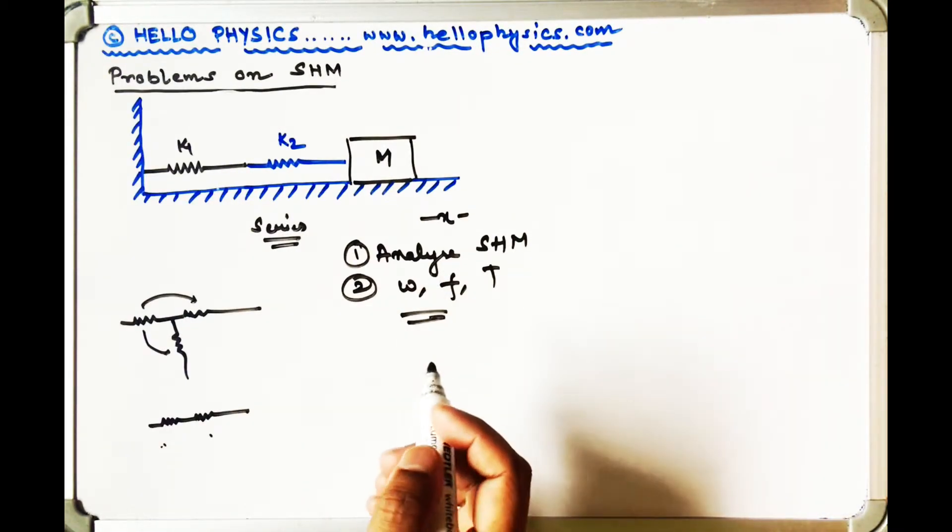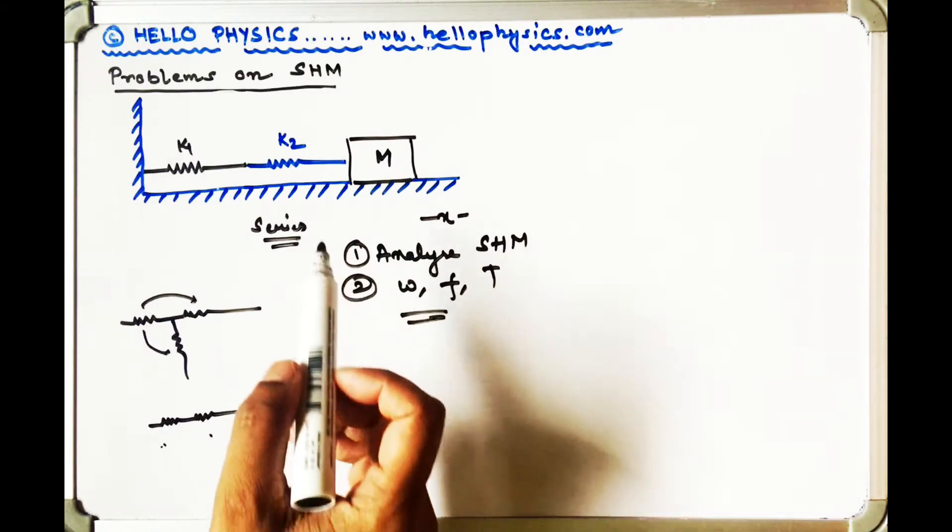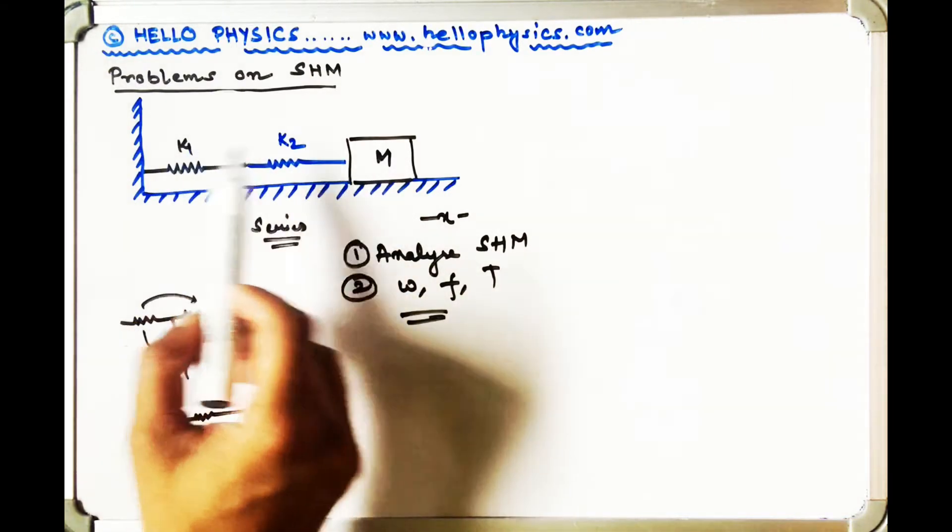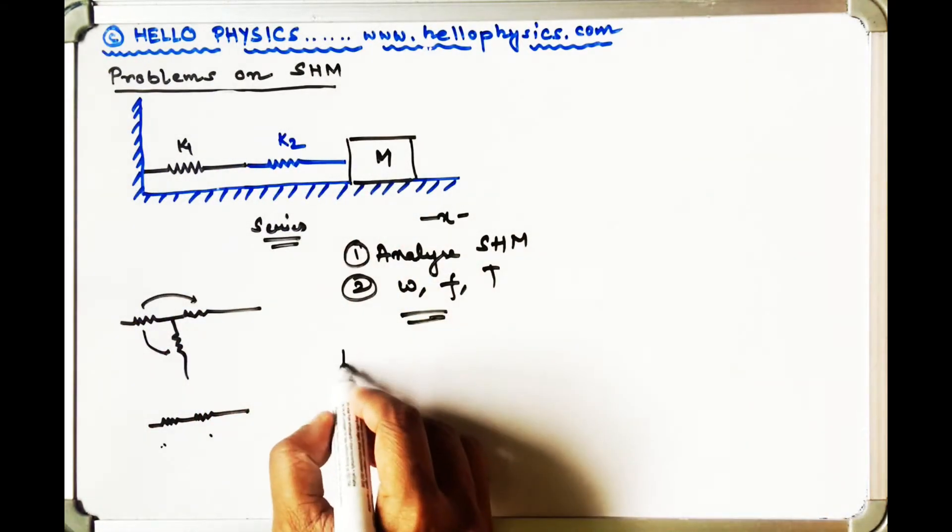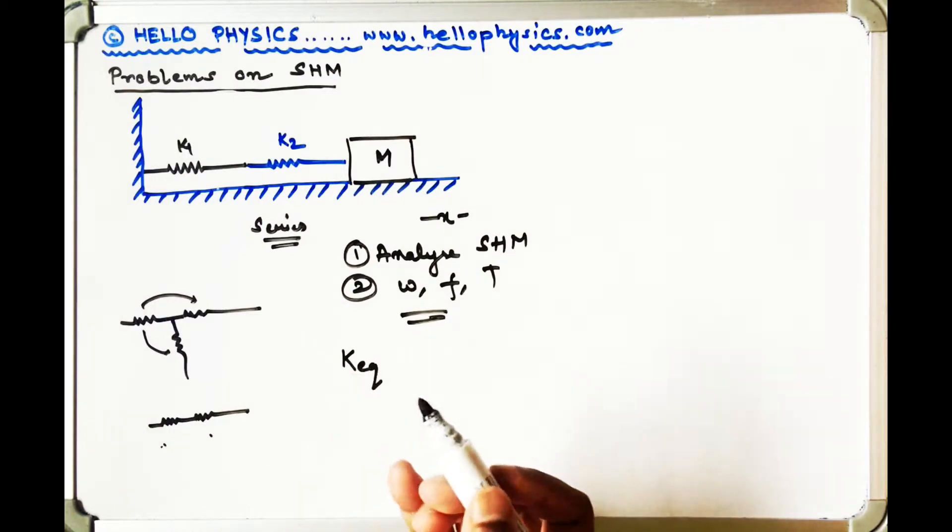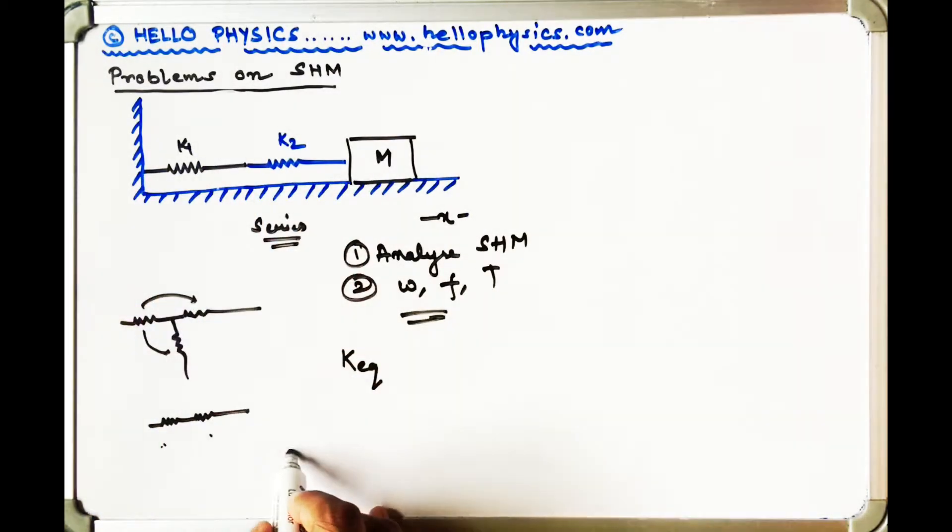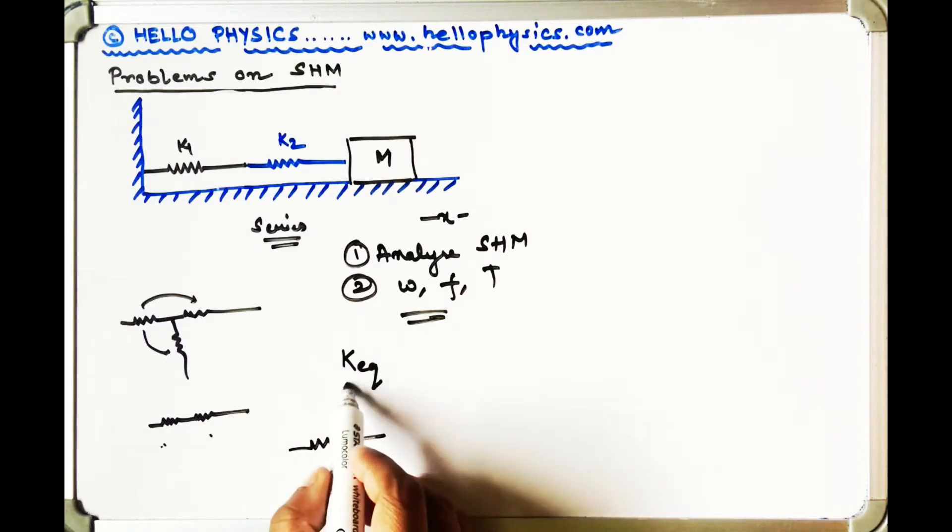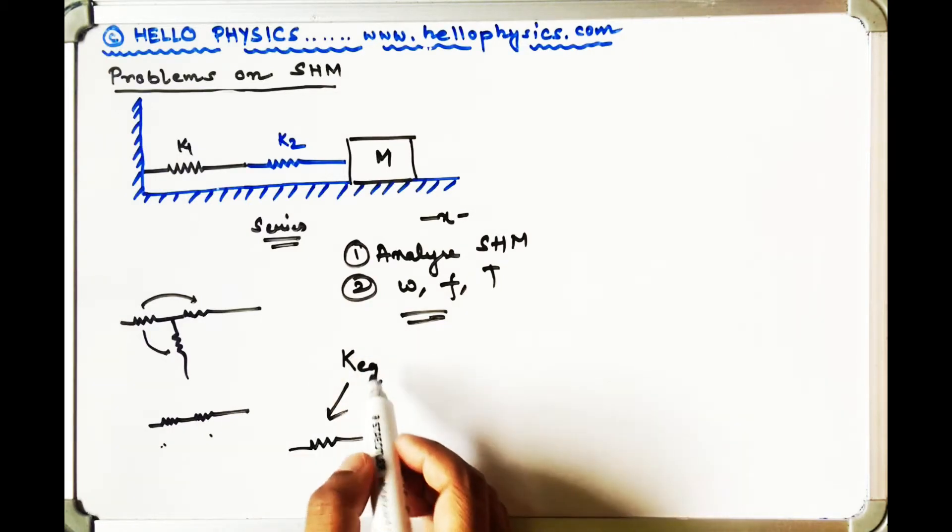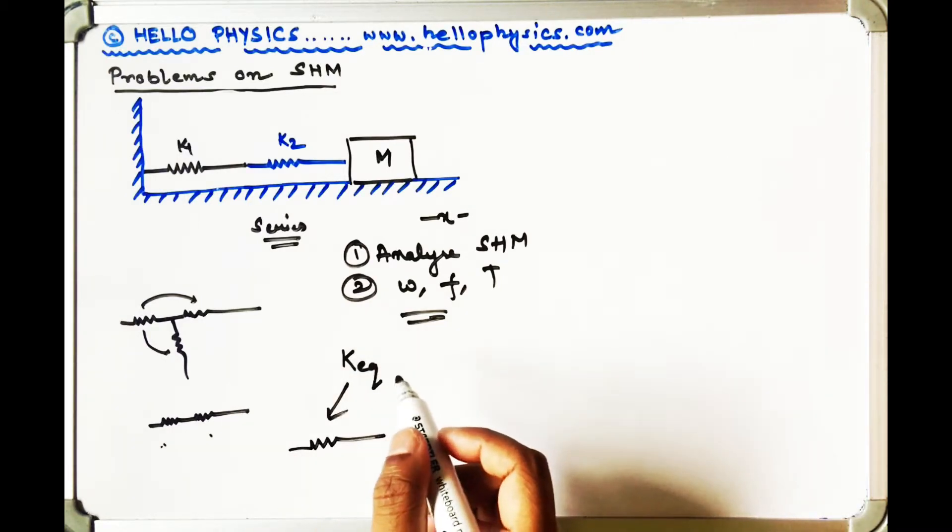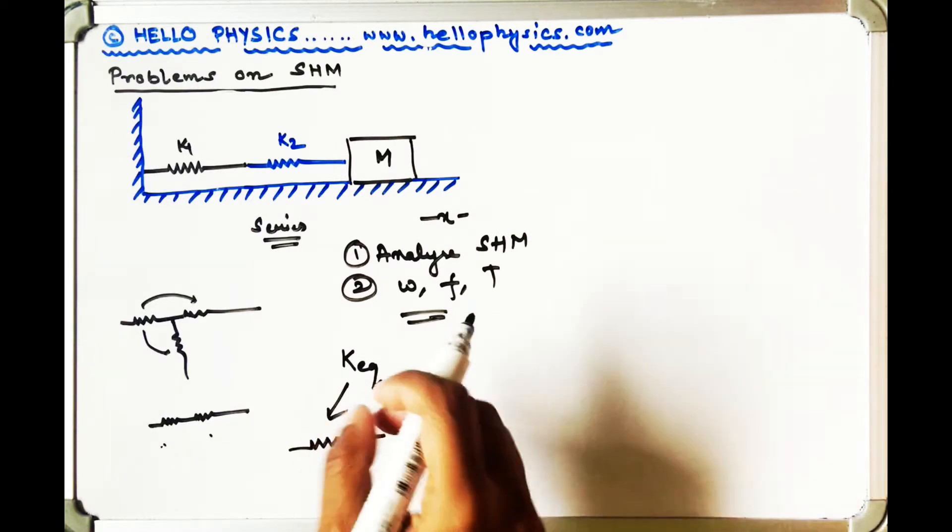Also what you have to do is analyze if when two springs are connected in series, you can find out an equivalent spring constant, or if you can replace these two springs by one single spring of some spring constant k equivalent. That analysis also we need to do.